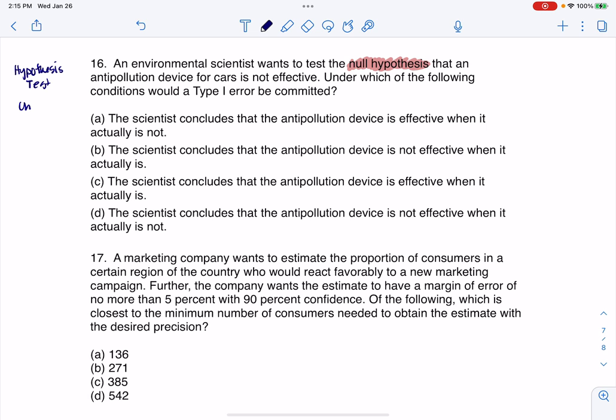This is going to be chapter 9. All right, wants to test the null hypothesis that an anti-pollution device for cars is not effective. Under which of the following conditions would a type 1 error be committed? Okay,